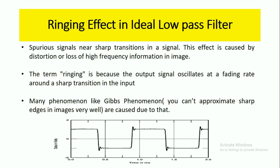The ringing effect refers to spurious signals which are present near the sharp transitions in a signal. This effect is caused by distortion or loss of high frequency information in the image. The term 'ringing' comes from the fact that the output signal oscillates at a fading rate around the sharp transitions at the input. This is also called the Gibbs phenomenon.